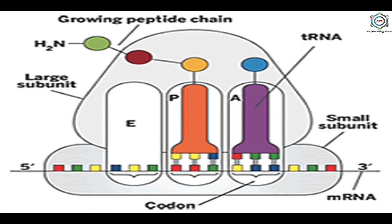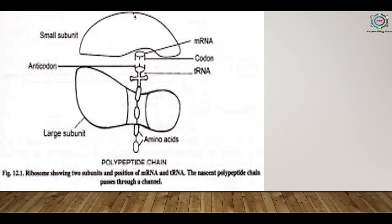In eukaryotic ribosomes, a groove at the junction of the two subunits is present. From this groove, a tunnel extends through the large subunit and opens into the lumen of the endoplasmic reticulum. Polypeptides are synthesized in this groove and pass through the tunnel into the ER. The developing polypeptide is protected from cellular enzymes while in the groove. The large subunit attaches to the ER by two glycoproteins named ribophorin I and II. The ribosome holds in position the mRNA, tRNA and associated enzymes until a peptide bond forms between adjacent amino acids.